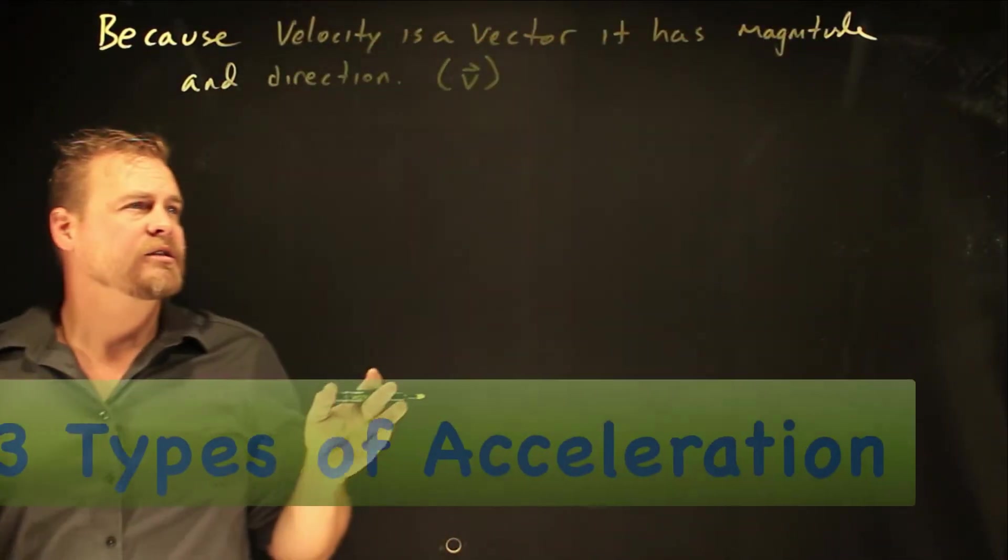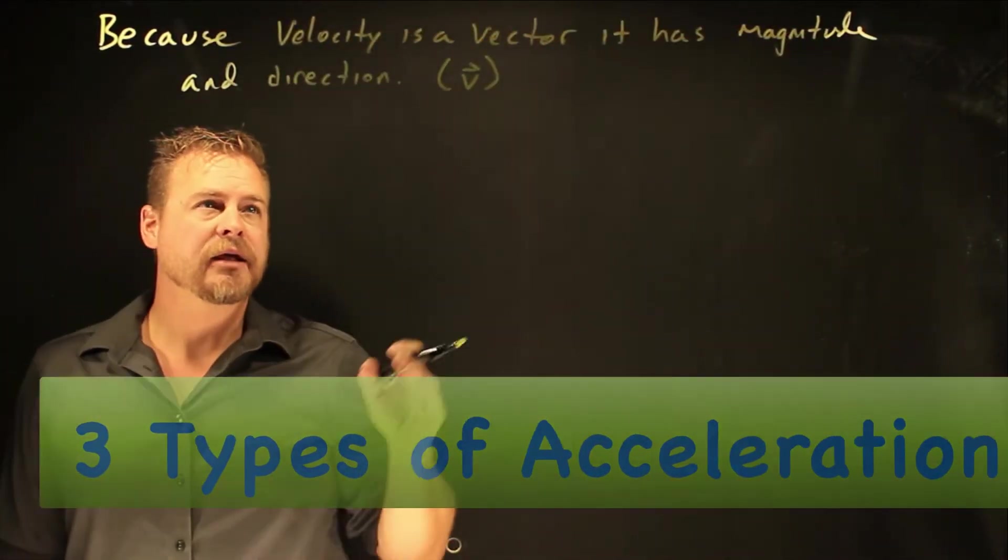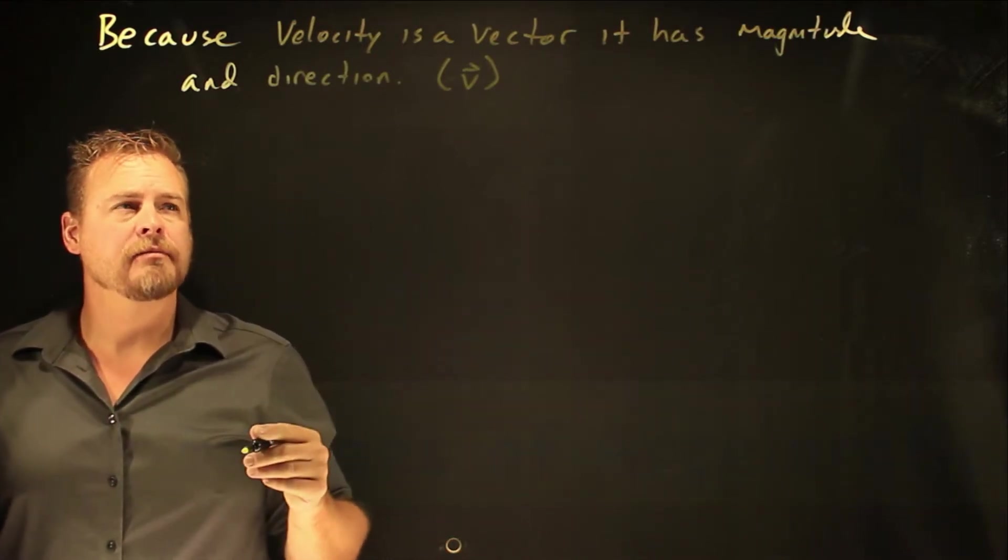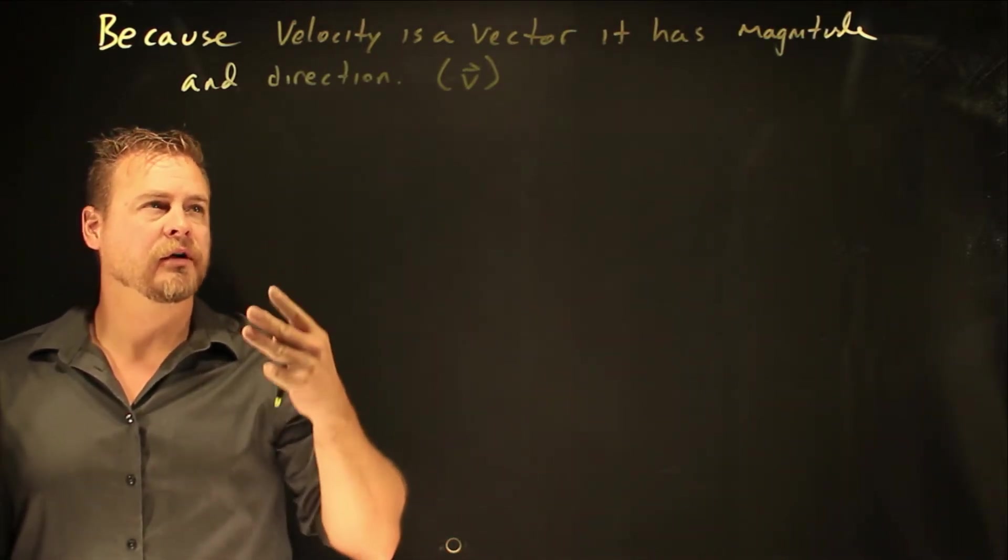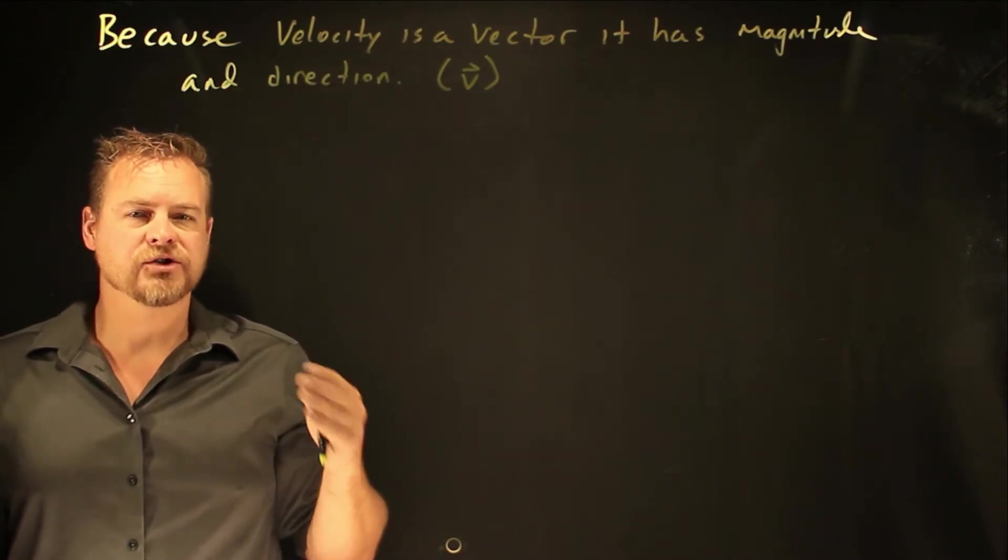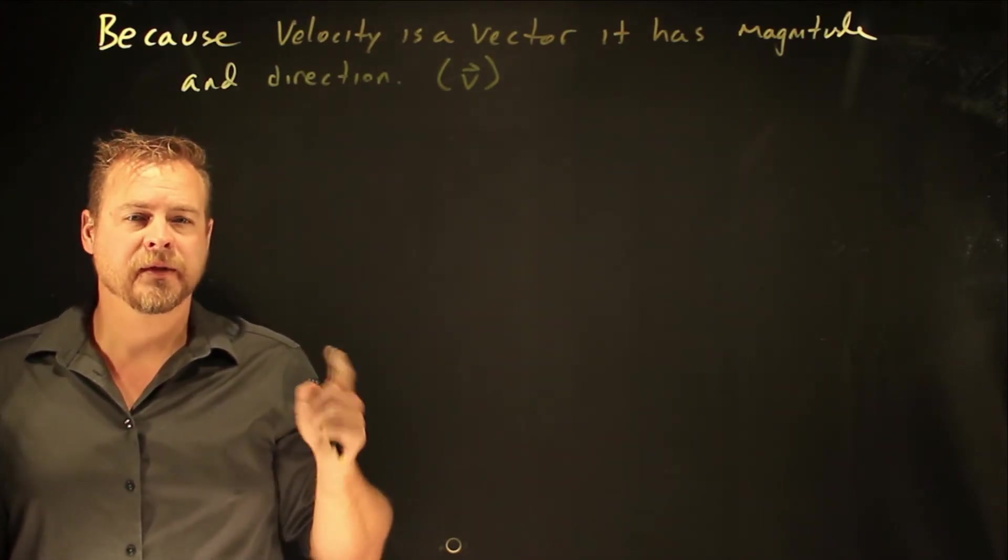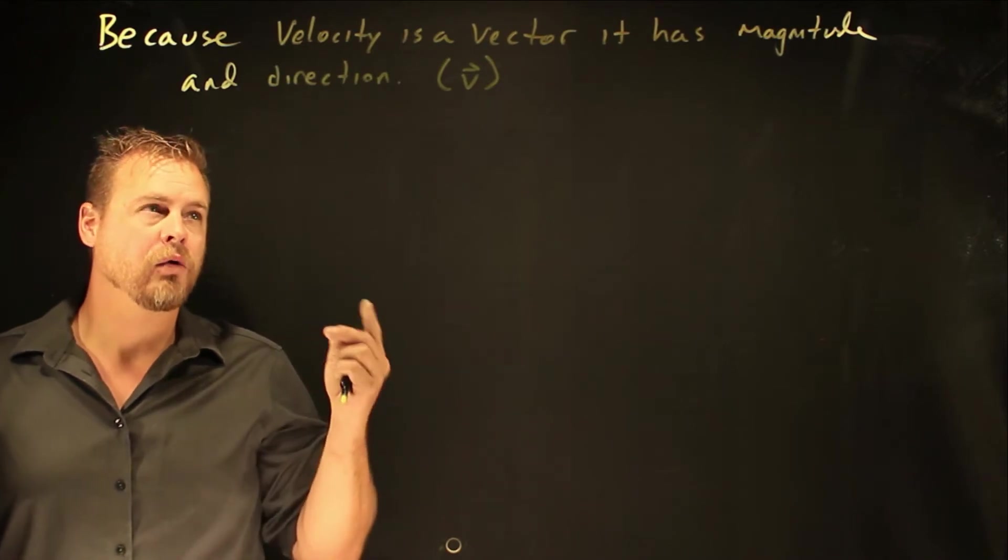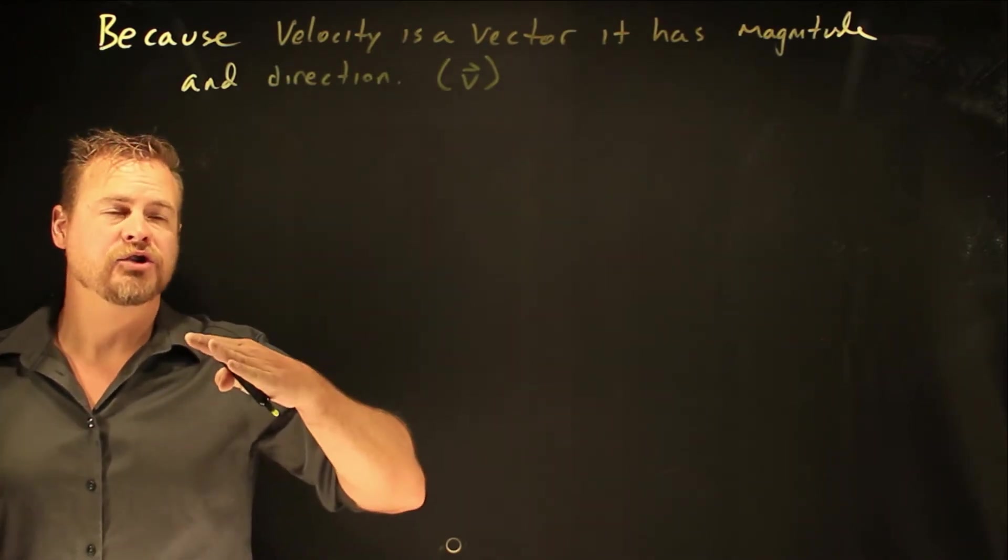So because velocity is a vector, it has magnitude and direction. And so what that means is that I can have three different kinds of velocity change. Velocity can get faster, velocity can get slower, or velocity can change directions.